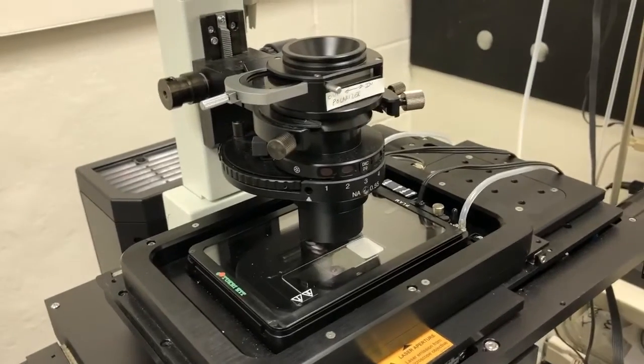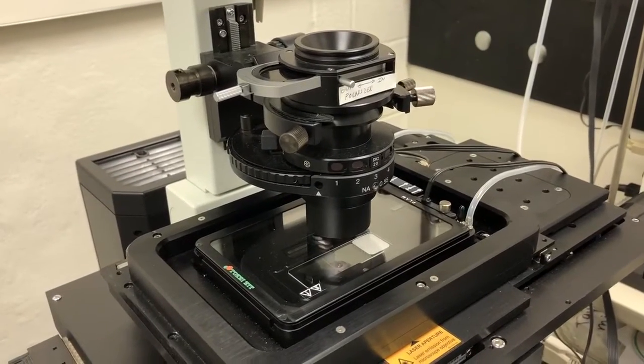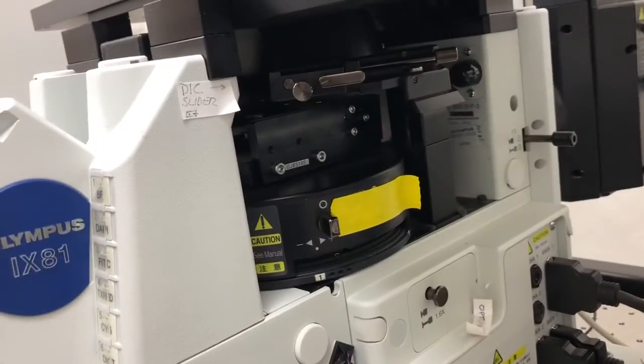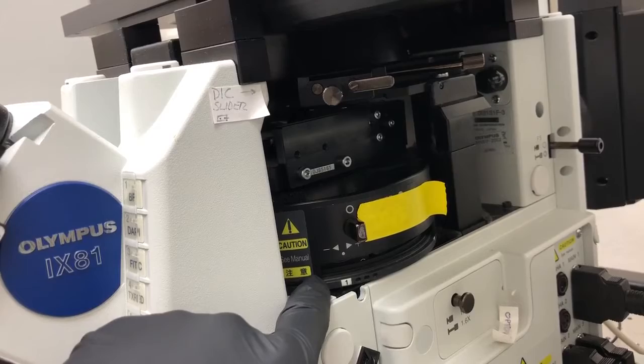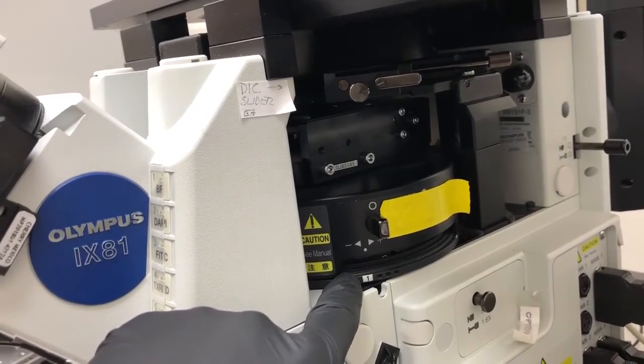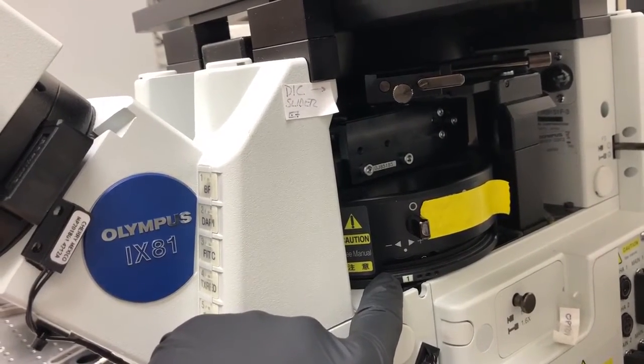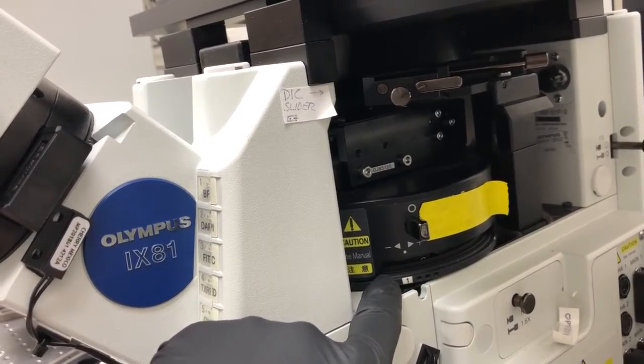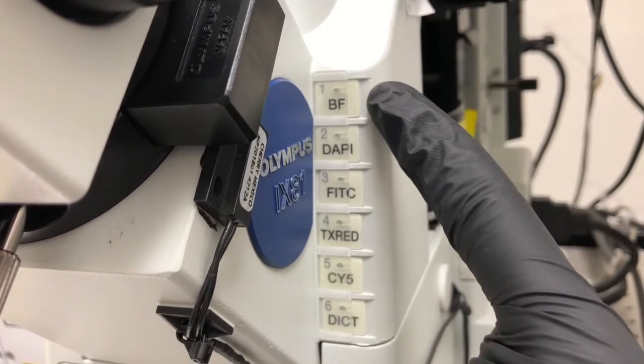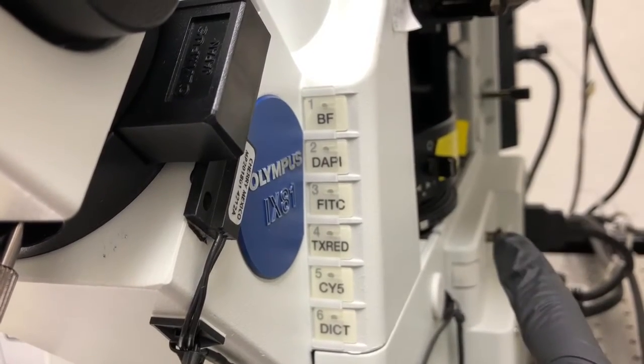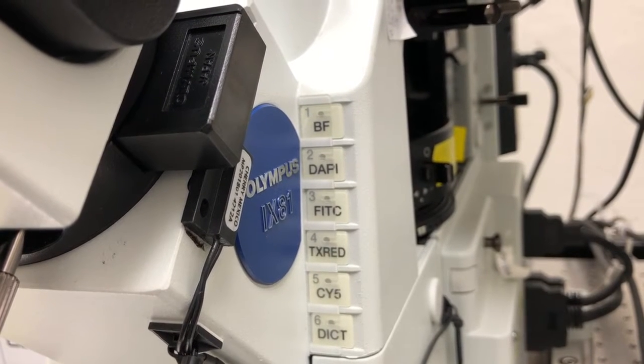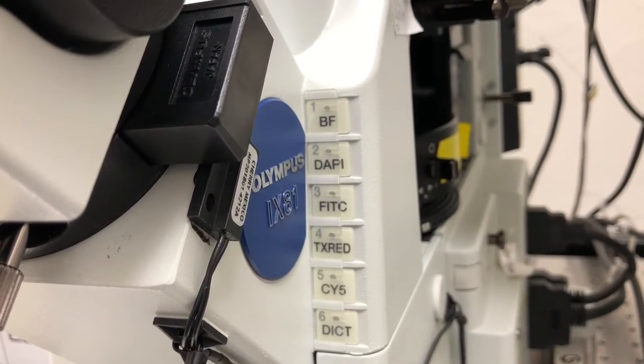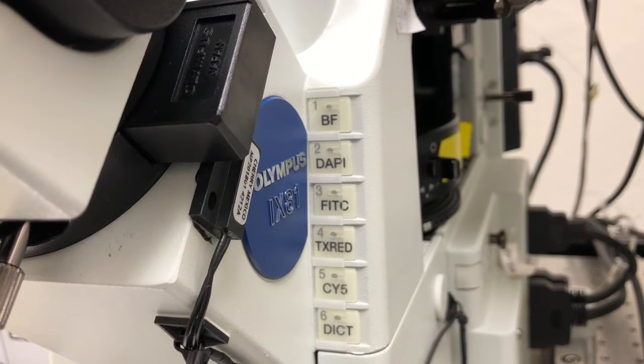But how do we make sure that light makes it through to the eyepieces? So the first thing we need to pay attention to is the position of this turret. This turret contains filter cubes that are used for different scenarios, which are outlined here on the side of the microscope. In position one of that filter turret, we can look at brightfield. In positions two, three, four, and five, we can look at different fluorophores by eye.